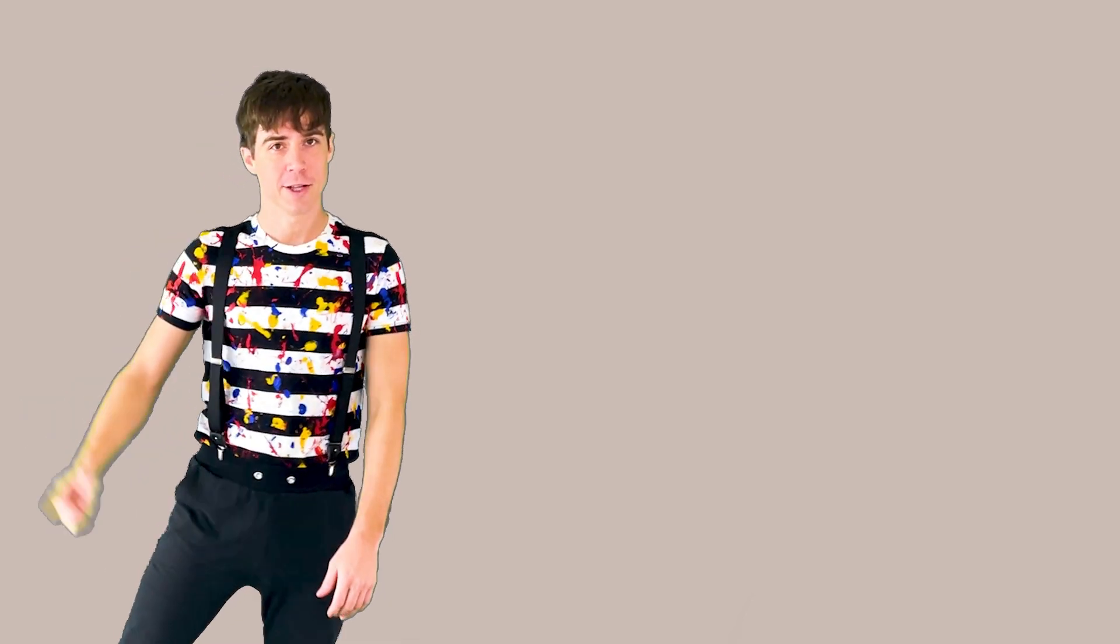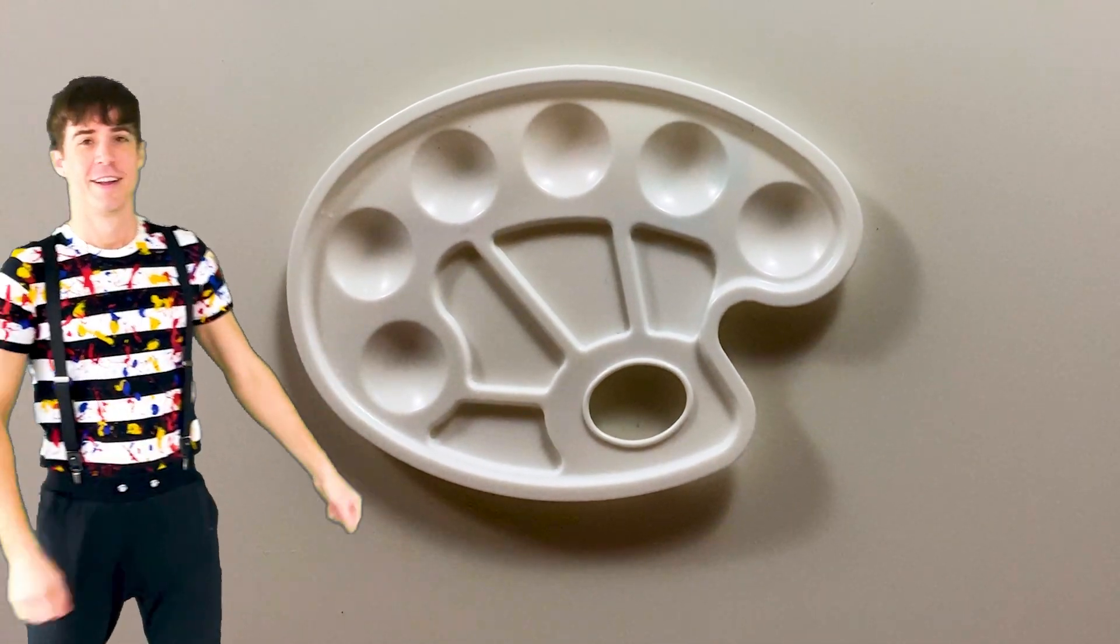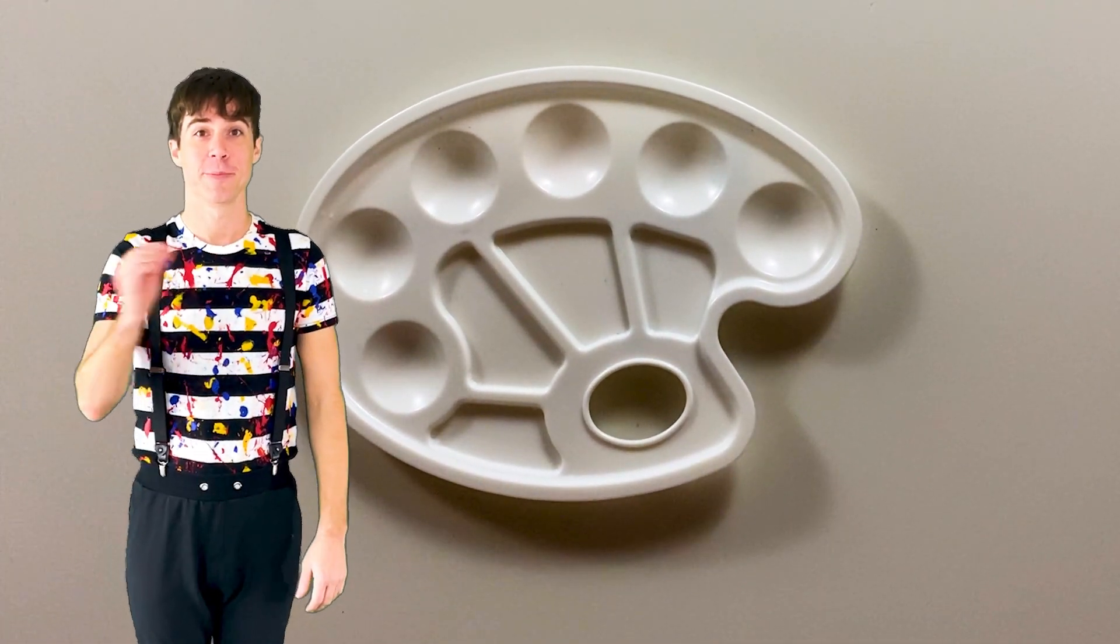Are you ready to paint a picture with me? We're going to paint a yellow rubber ducky. First, we're going to need a palette. A palette is where you can mix your paint.